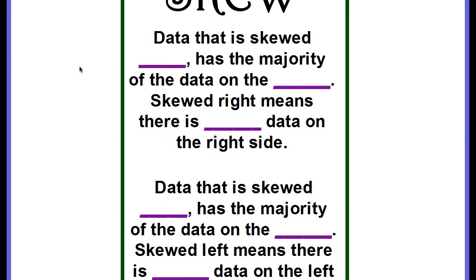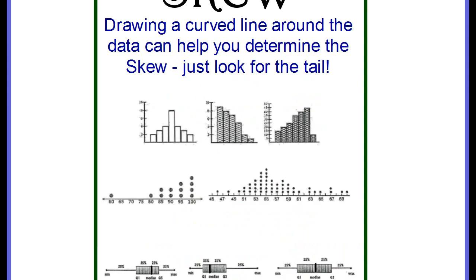Then we have skew. Data that is skewed right has the majority of the data on the left side. Skewed right means that there is less data on the right side. Data that is skewed left has the majority of the data on the right side. So skewed left means there is less data on the left side. So what does this look like? If you can actually draw a curved line around the data, it will help you determine if it's skewed left or right. You just look for the tail.